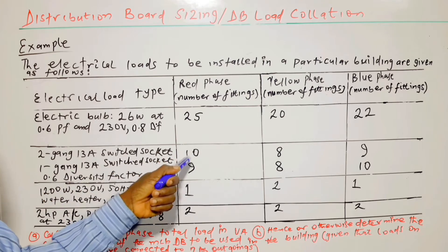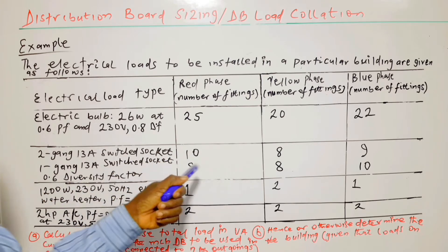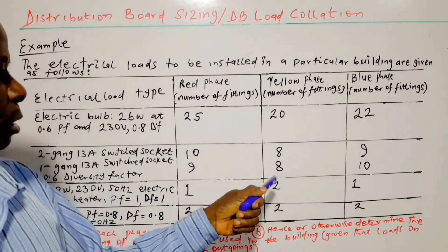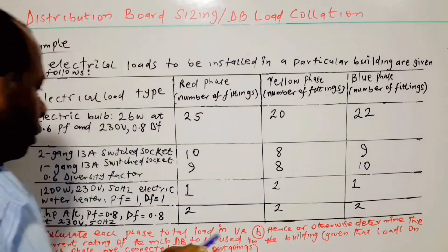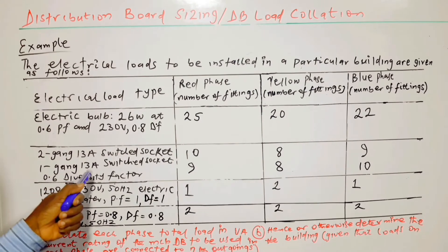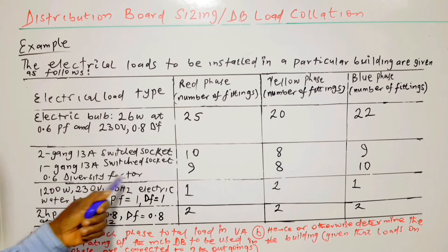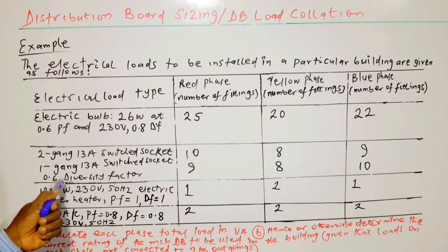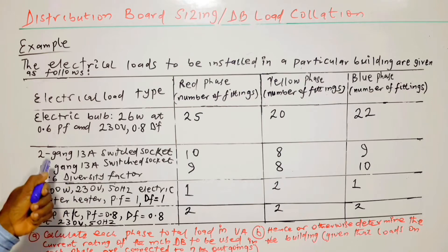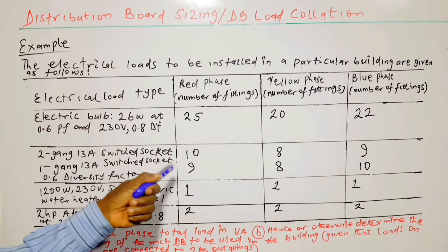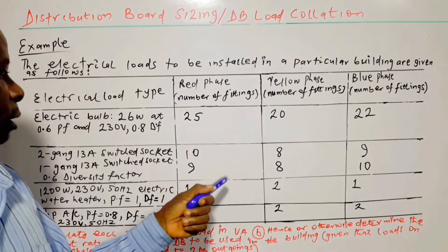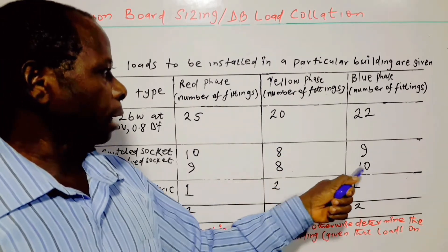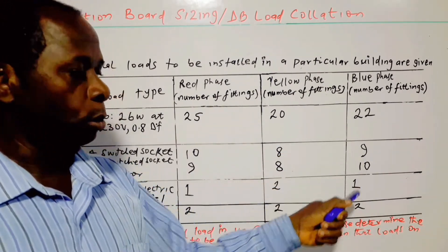For 2-gang 13-amp switch circuits at 0.6 diversity factor, we have 10 on red phase, 8 on yellow phase, and 9 on blue phase. For 1-gang 13-amp switch circuits at 0.6 diversity factor as well, we have 9 on red phase, 8 on yellow phase, and 10 on blue phase.